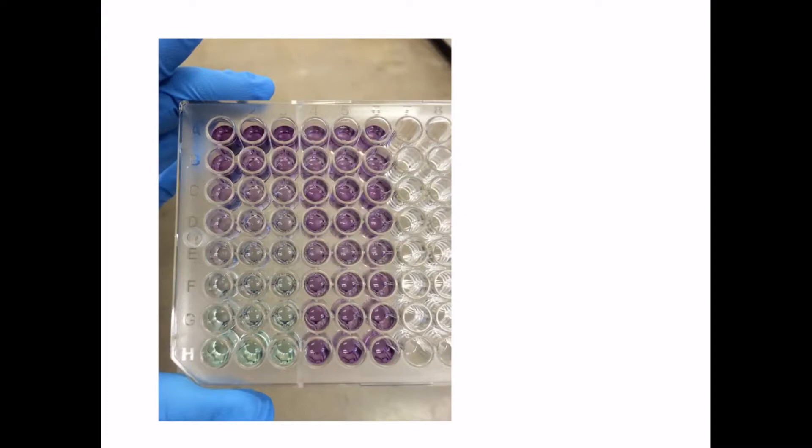So the way that this works is that on one side of this, there has been a standard curve pipetted, so this is a protein of known concentration on this side, and these are each different dilutions of that known protein, while on the other side is our unknown sample that we want to know the concentration of the protein.